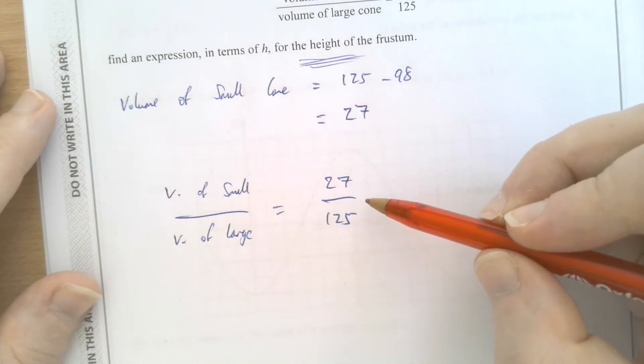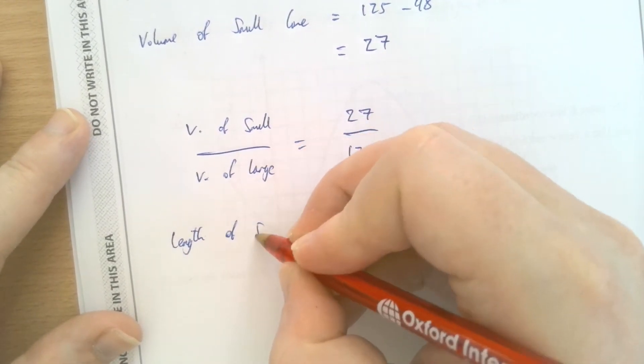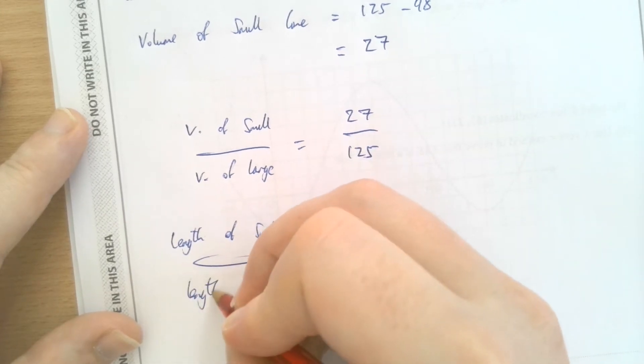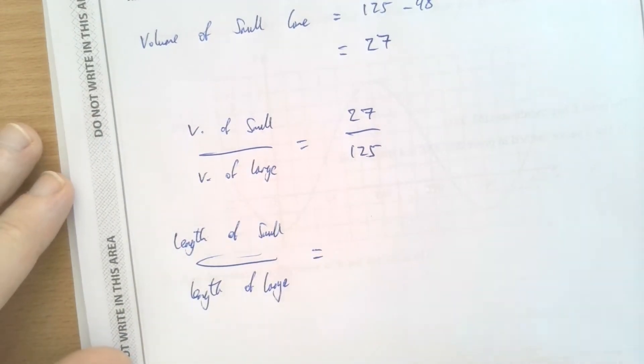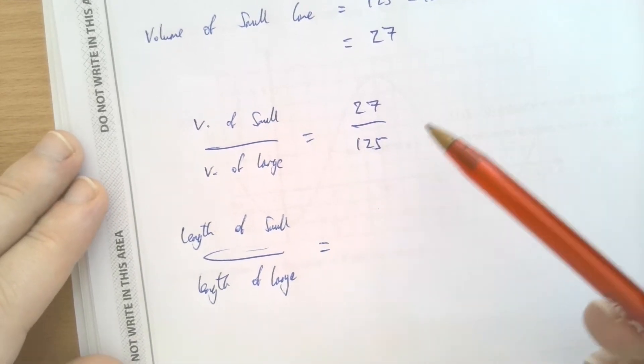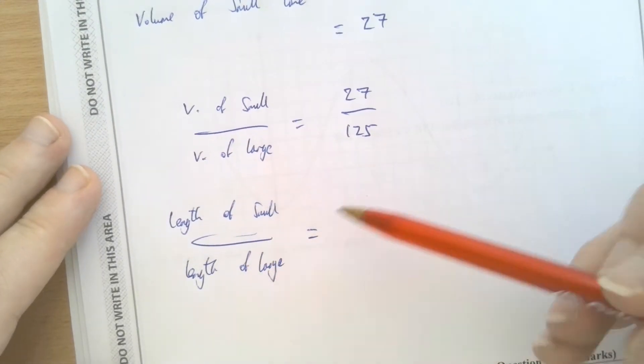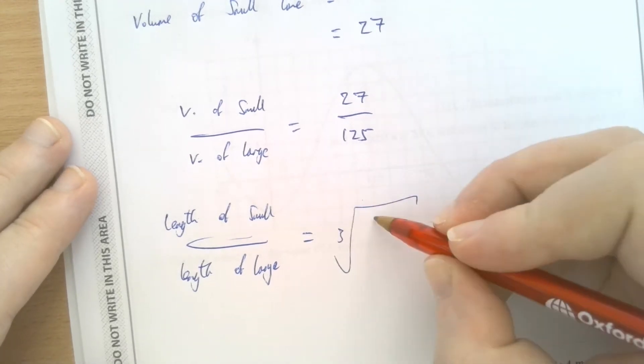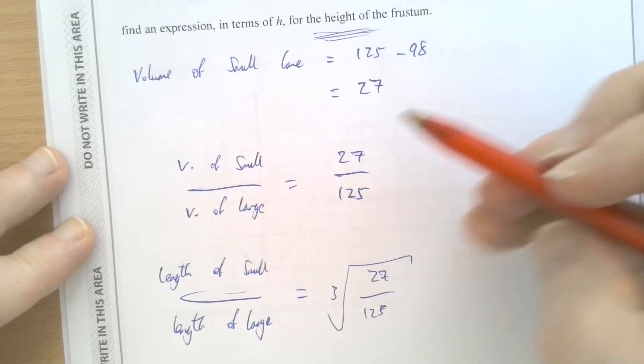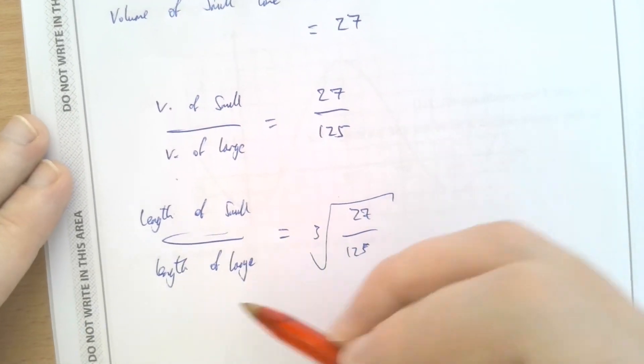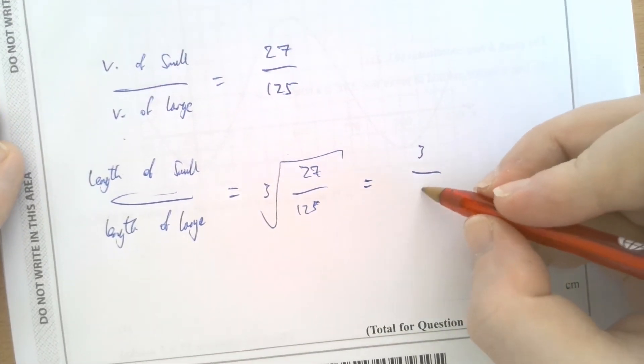So if this is relating to volumes, then what about lengths? How would I find the length of small versus the length of the large? Well, if you've been spending any time doing work on length, area and volume scale factors, you know that they're linked by squaring and cubing. So if I want to go from the volume expression, the volume fraction to a length fraction, I just cube root the volume one. I just cube root the fraction representing volume of small compared with volume of large to find the length of small compared with length of large. So the cube root of 27 is 3, and the cube root of 125 is 5.